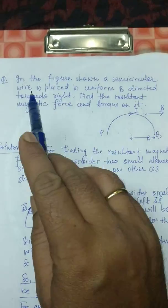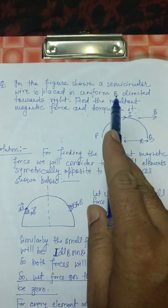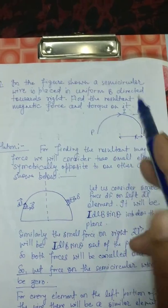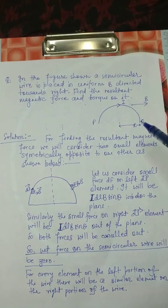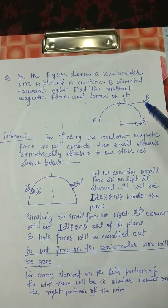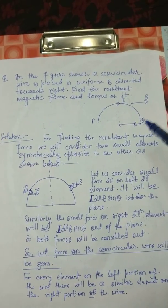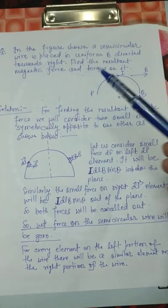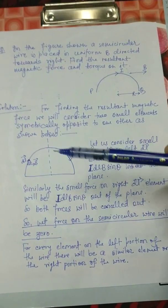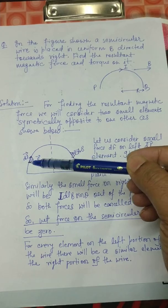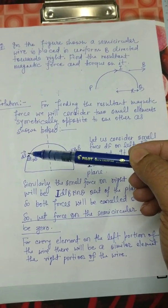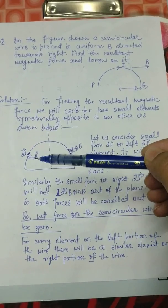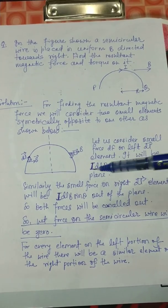In the figure shown, a semicircular wire is placed in a uniform magnetic field B directed toward the right. Find the resultant magnetic force and torque on it. The wire has radius R and carries current I. For finding the net force on this wire, we will consider a small DL element and find the magnetic force using the formula: dF = I dL cross B, so the magnitude will be I dL B sine theta.